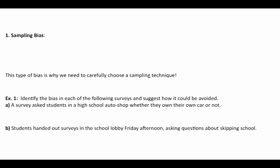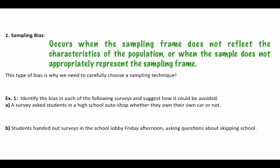Let's look at our first type: sampling bias. We've just finished looking at sampling in the last lesson, so let's talk about sampling bias first. Sampling bias occurs when the sampling frame does not reflect the characteristics of the population, or when the sample does not represent the sampling frame. This is why it's so important to choose an appropriate sample based on a good method. For example, if I wanted to ask students about their feelings on smoking and I went out to the smoke pit to ask the questions, chances are my results might be a little skewed.